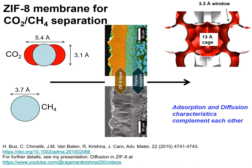These windows are flexible, and this flexibility allows molecules that are slightly larger than 3.3 Angstrom to pass through. Typically, the membrane would be constructed of thin layers of about 50 microns on a support, which is macroporous — in this case, a titanium support.